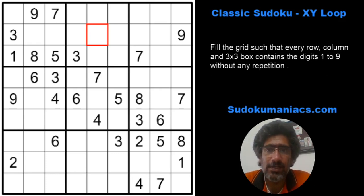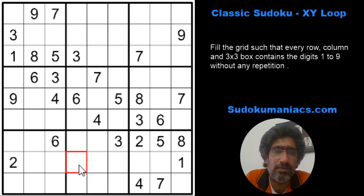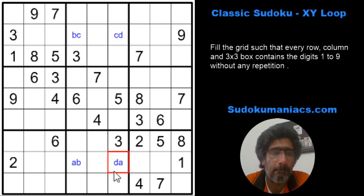So moving forward, today we are going to look at another advanced technique. This one is known as an XY loop. In this technique, what happens is we have a combination of two digits, just like the XY chain, except that it's not a straight chain but it forms a rectangular shape. For example, if this was an AD, this is BC, this is CD, and this is AB.